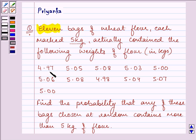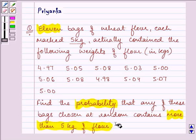That is 4.97, 5.05, and so on till 5.00. Find the probability that any of these bags chosen at random contains more than 5 kg of flour.